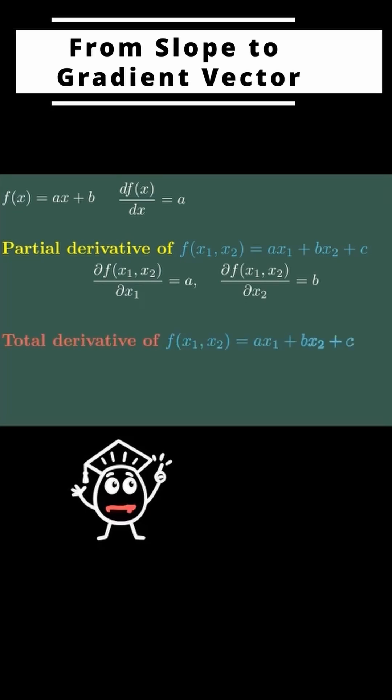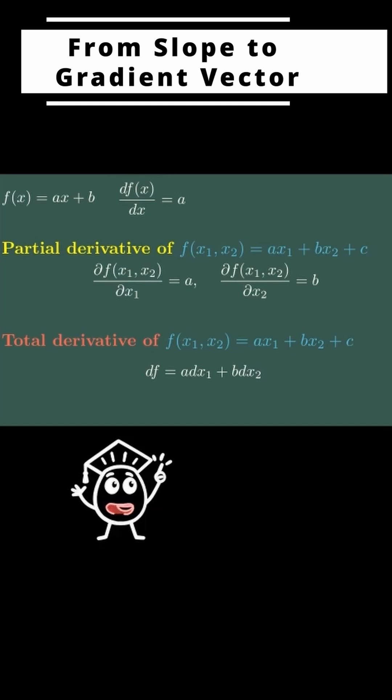The total differential is more global. What if both change a little bit at the same time? Then, df equals a dx1 plus b dx2. Since our function here is linear, this formula is exact.